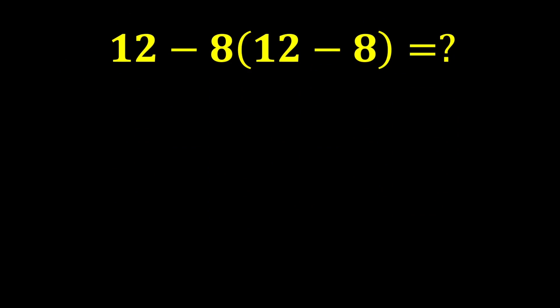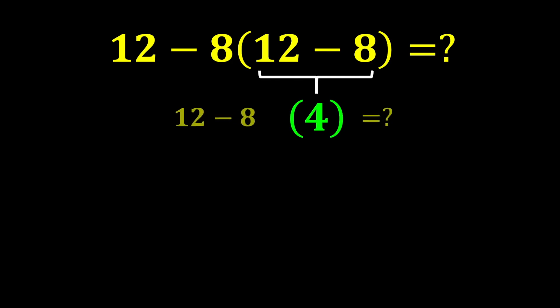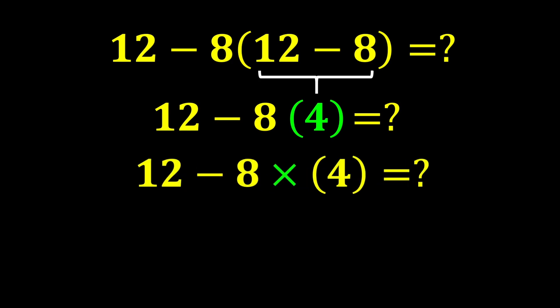First example: 12 minus 8 times (12 minus 8). According to PEMDAS, we first calculate the parentheses. 12 minus 8 gives us 4, and the expression becomes 12 minus 8 times 4. Note that whenever a number is next to parentheses, it means multiplying that number by the expression inside the parentheses; however, usually the multiplication sign is omitted for simplicity.